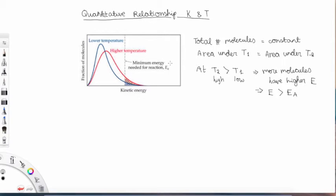And so that's why the energy distribution at the higher T2 temperature is flatter and more spread out, so that more molecules can have higher energy and more of them have an energy value that is greater than the activation energy.